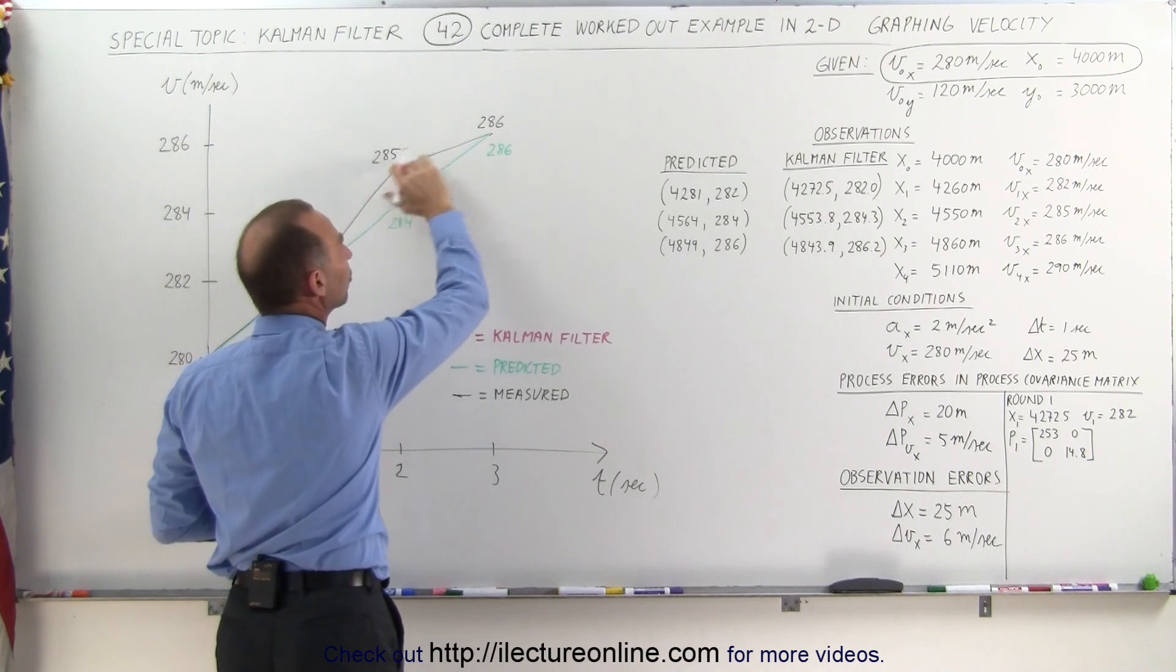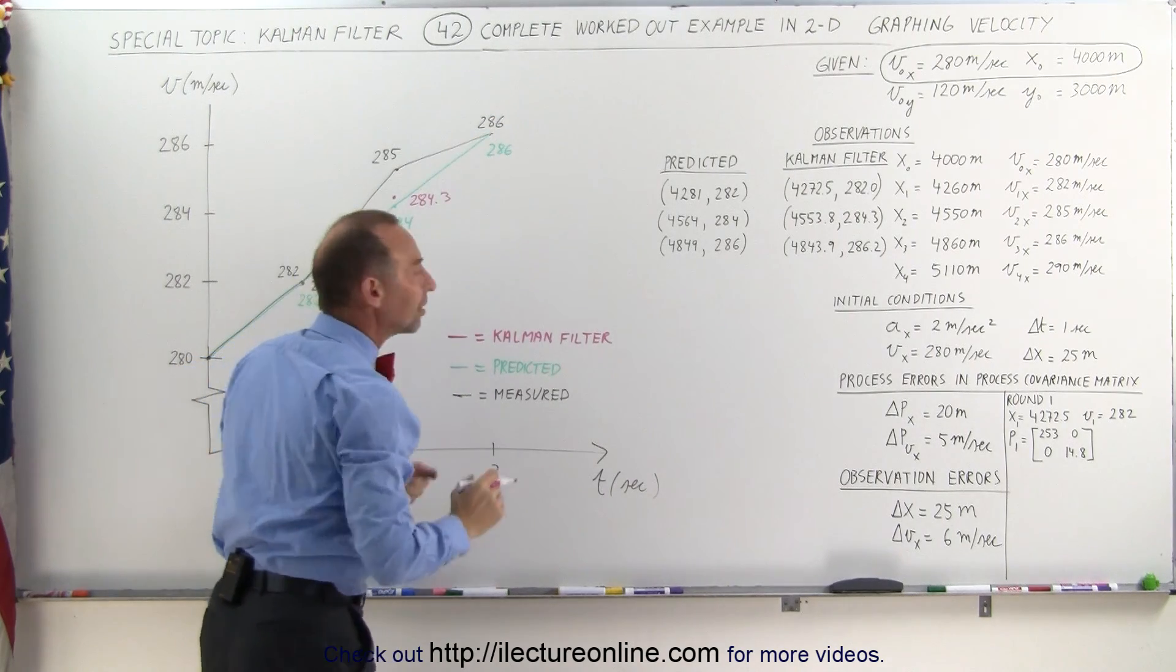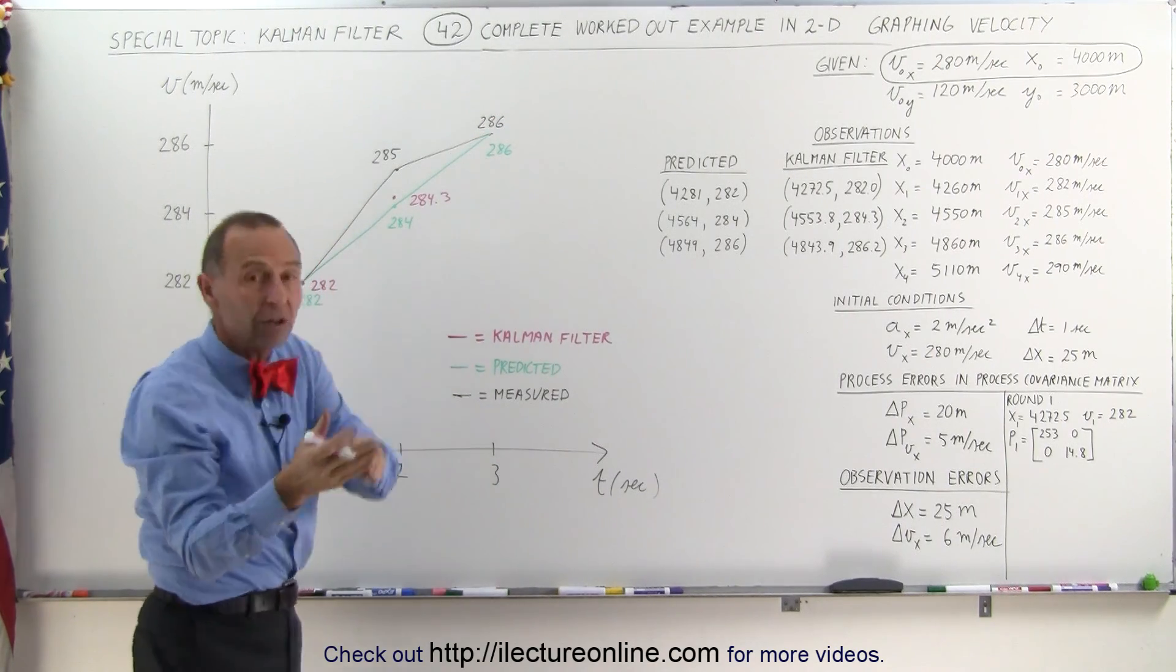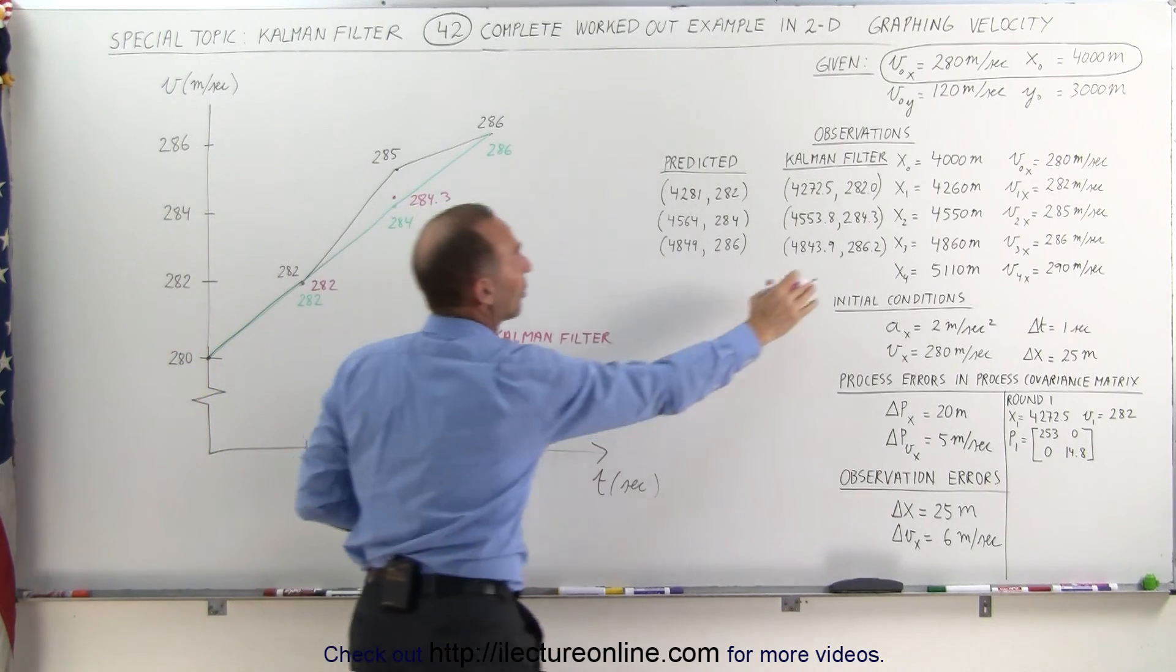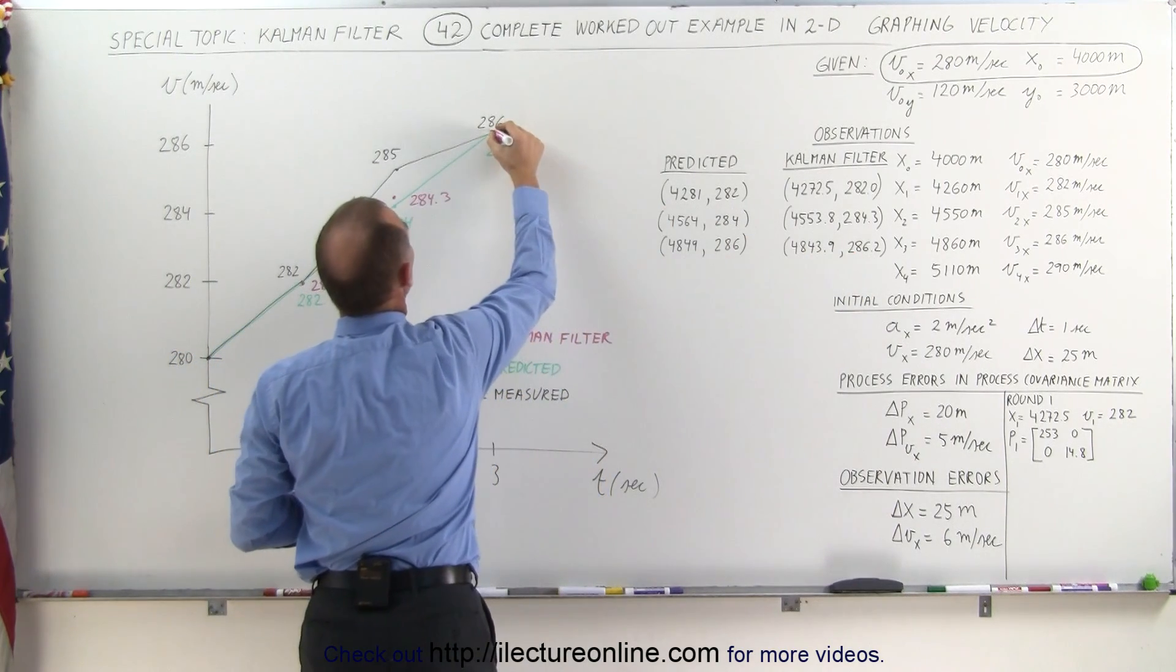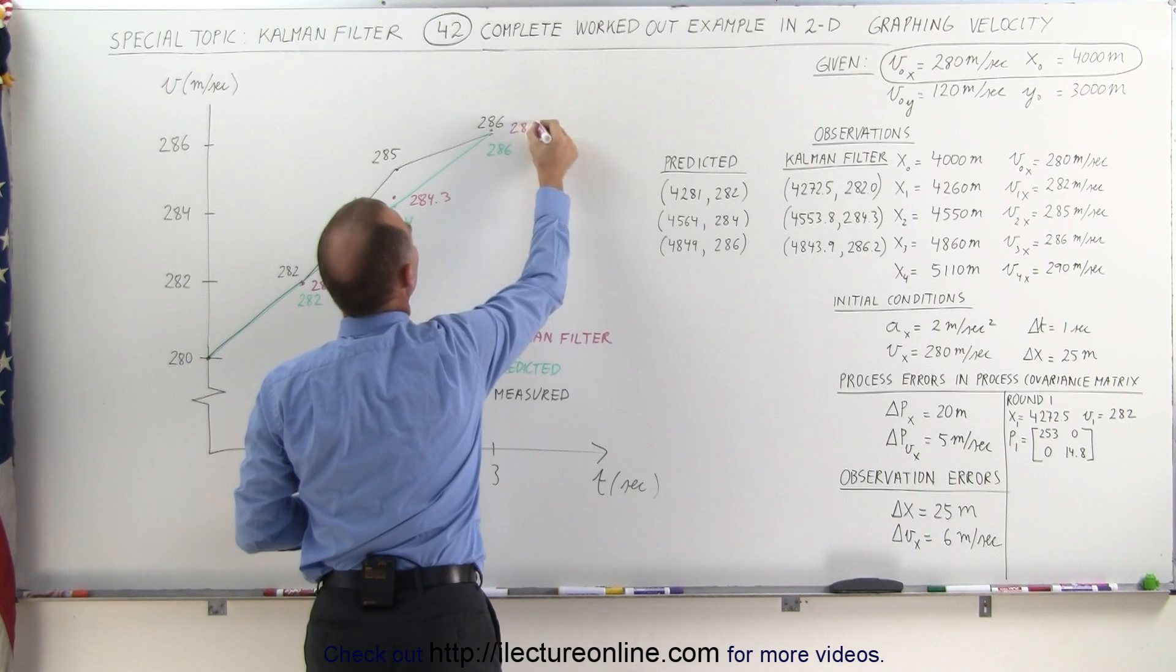And then the measured value goes back to the same as the predicted value. The Kelvin filter follows but doesn't follow it immediately and zeroes in at 286.2 for the Kelvin filter value.